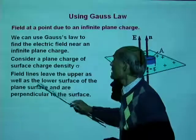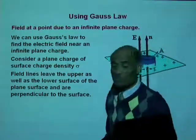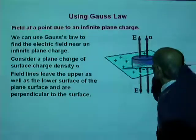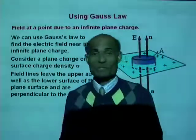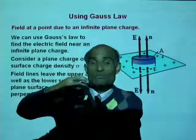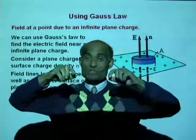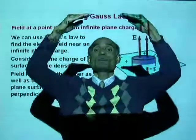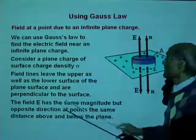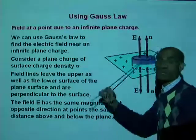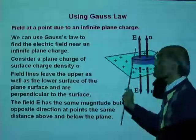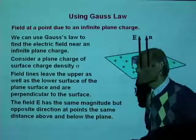Field lines leaving the upper as well as the lower surface of the plane will be perpendicular to the surface. Assume that the charge carried by the plane surface is positive — that means electric field lines will be originating from it. Above the surface, the field lines will be directed upward, and below, the field lines will be directed downward. The field E has the same magnitude above and below the surface, but they are oppositely directed.